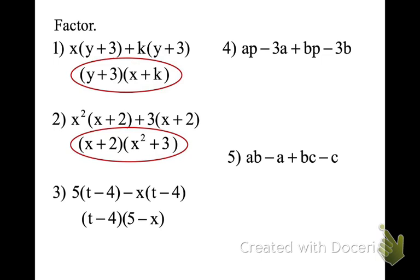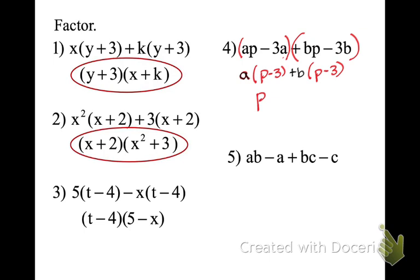Now you get to add your own parentheses. Make the first two a group — notice all four terms don't have a common factor. But if you group them in two: in the first group, pull out an a and I'm left with p minus 3. In the second group, pull out a positive b and we are left with p minus 3. So if I pull out my common binomial factor of p minus 3, everything we're left with goes in the other parenthesis.